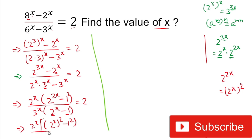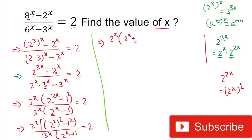Using the identity a² minus b² equals (a+b)(a-b), we write the numerator as 2 to the power x times (2 to the power x plus 1) times (2 to the power x minus 1). The denominator is 3 to the power x times (2 to the power x minus 1), all equal to 2.